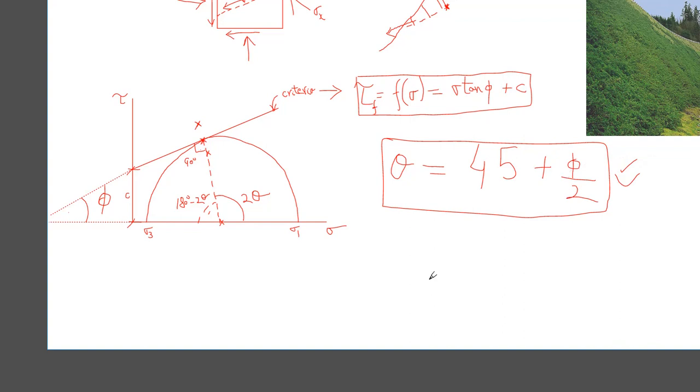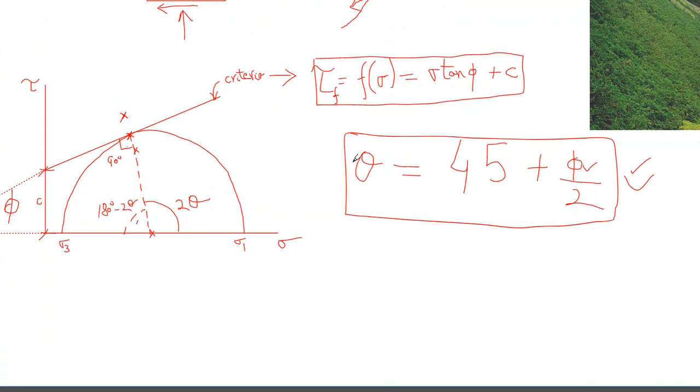And so we have already established a relationship between our friction angle and our theta angle in the Mohr circle, theta being the orientation.